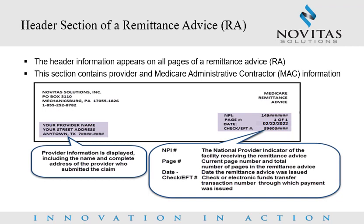Header section of a remittance advice. The header section appears on all pages of the remittance advice. The bottom left-hand corner of the header section will contain the provider information, including the name and complete address of the provider who submitted the claim. The bottom right-hand corner will contain the MPI, or National Provider Identifier, of the facility receiving the remittance advice. Additional fields include the page number, listing the current page and total number of pages, and the date the remittance advice was issued.